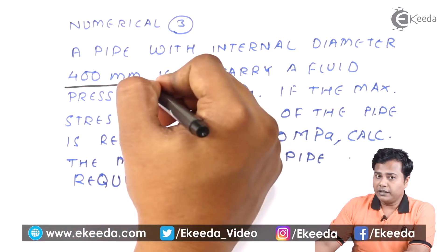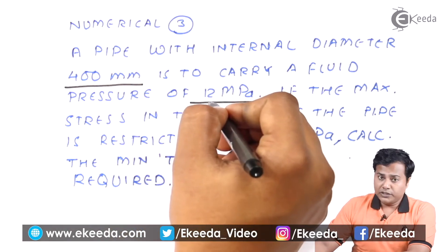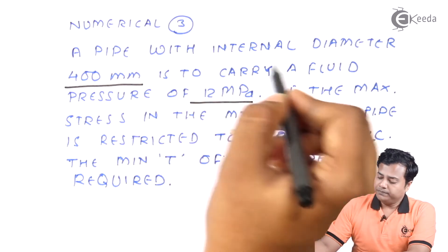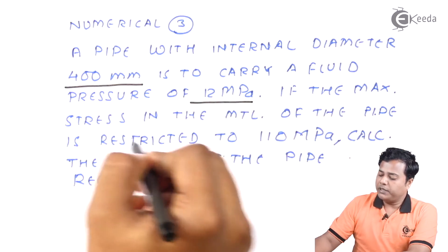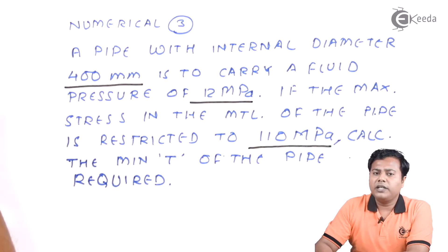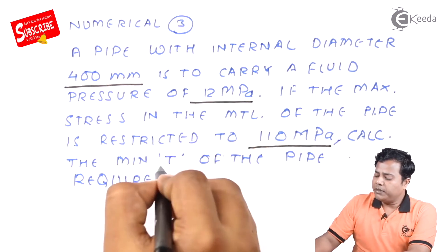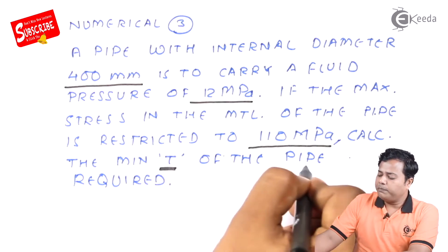We have been given the internal diameter which is very crucial. We have been given the internal pressure that is going to act inside the pipe. If the maximum stress in the material of the pipe is restricted to 110 megapascal, that is 110 Newton per mm square, calculate the minimum thickness of the pipe required.